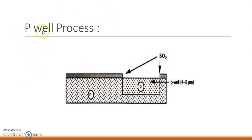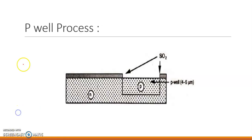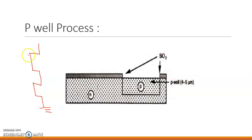First is the P-well process. In the P-well process, if you remember how we are going to form a CMOS inverter — in a CMOS inverter, we have one PMOS and then we have one NMOS.